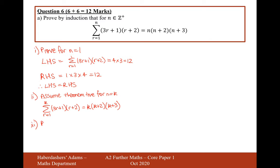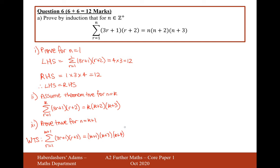What we're going to do is prove true for n equals k plus 1. What we want to show — WTS — is that our theorem, if we sum up to k plus 1, is going to give an answer of k plus 1 times k plus 3 times k plus 4. Because what I've done there is just set n equal to k plus 1 on both sides. That's what we want to show.